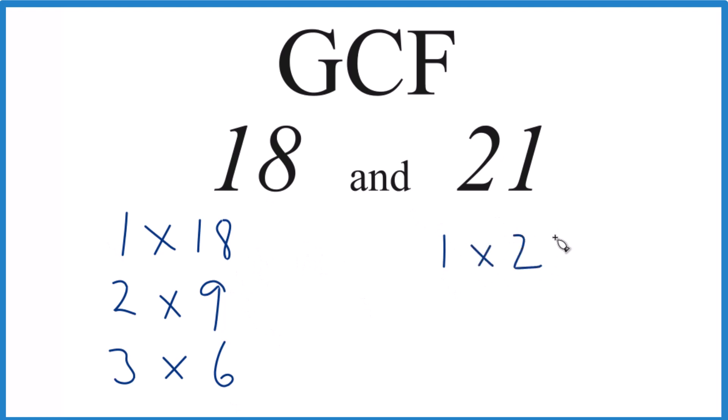For 21, 1 times 21 equals 21, 3 times 7, and that's it for 21.